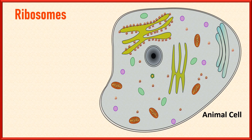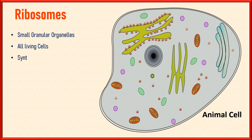What are ribosomes? Look at the blinking dots in the diagram. In biology, ribosomes are small granular organelles found in the cytoplasm of all living cells. They play a crucial role in the process of protein synthesis and are called protein factories of the cell.